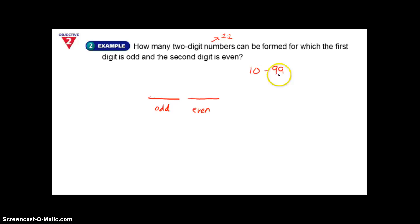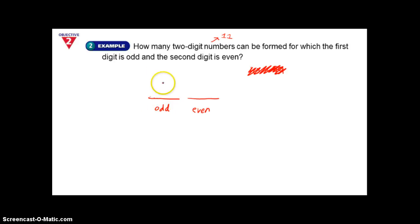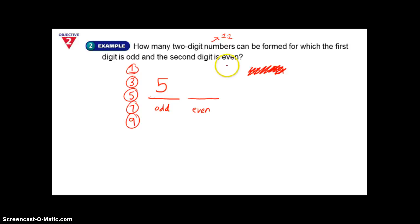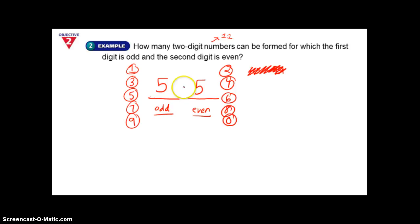You could list all numbers between 10 and 99 and count them, but that would take a long time. Instead, use the counting principle. The first digit must be odd — you could pick 1, 3, 5, 7, or 9, that's 5 choices. For the second digit, even numbers are 0, 2, 4, 6, 8, also 5 choices. So we take 5 times 5 and get 25 two-digit numbers.